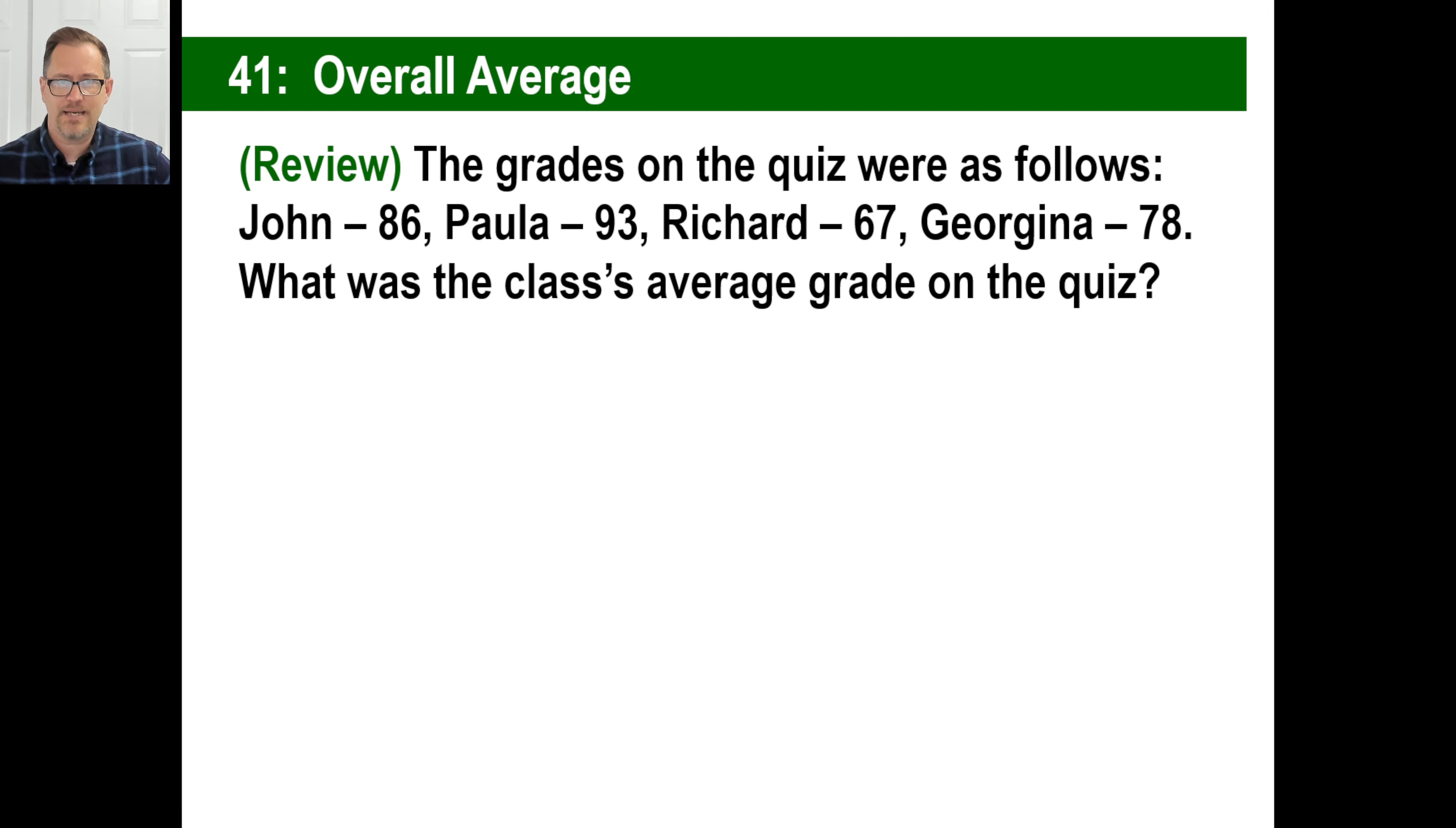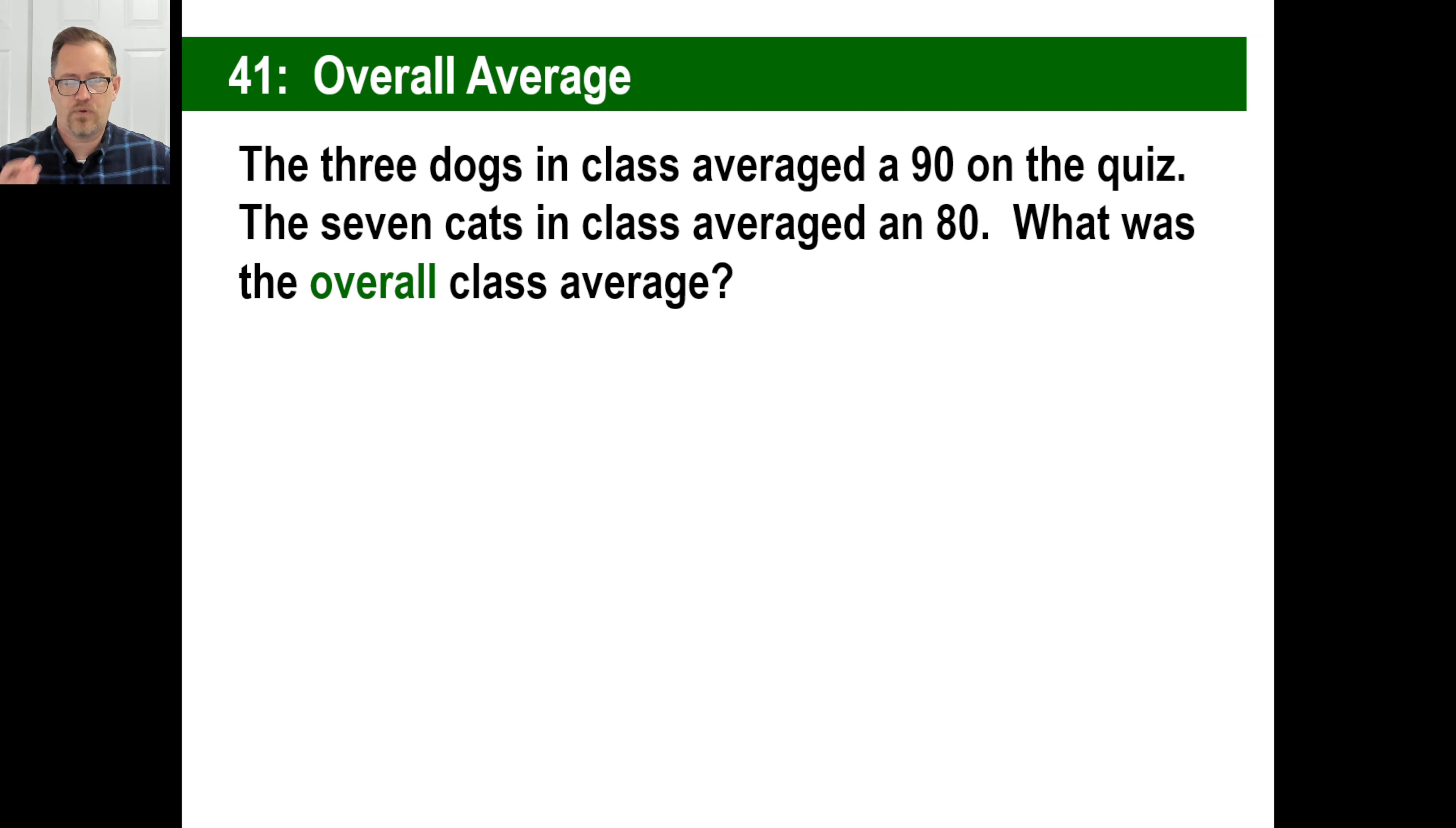Sometimes, however, we have a different type of average problem. Here's a practical one for you. The three dogs in class averaged a 90 on the quiz. The seven cats averaged an 80. Obviously, cats are dumber than dogs. What was the overall class average? Now, if you say there's 90 and then there's an 80, it must be 85. Well, that's not exactly correct, because there are only three dogs that averaged a 90, seven cats averaged an 80. So the overall average is going to be closer to 80, because there were more animals that averaged 80% than there were animals that averaged 90. So it won't be just in the middle of 85.